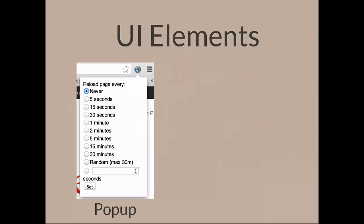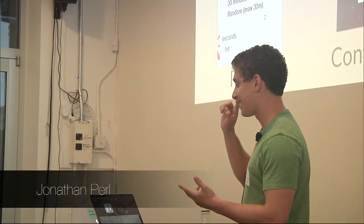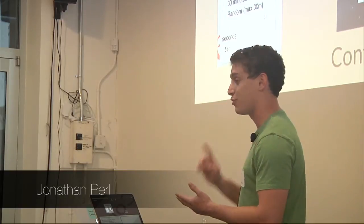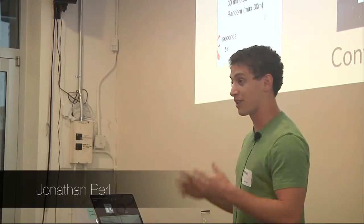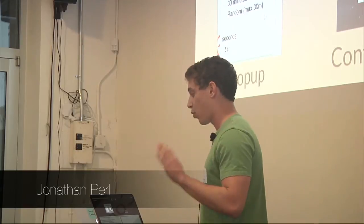The main UI elements you'd work with are the popup — when you click on the icon, you get a popup where you can create any HTML. You can also modify the context menu; in LastPass, for example, you can right-click on an input and choose from different usernames to auto-populate. More advanced options include overriding the bookmark manager, the history page, or the new tab page. You can even add to Chrome's developer tools.